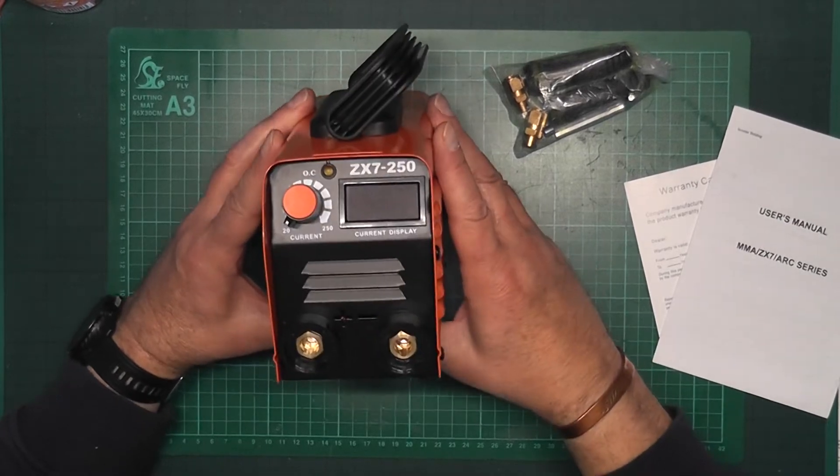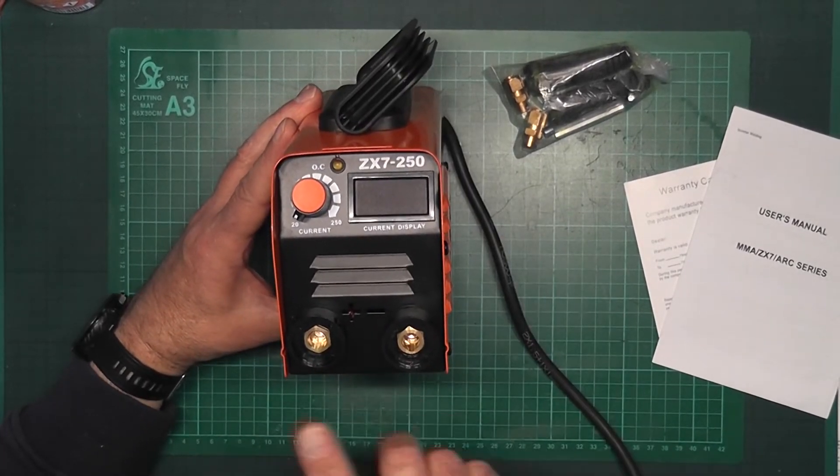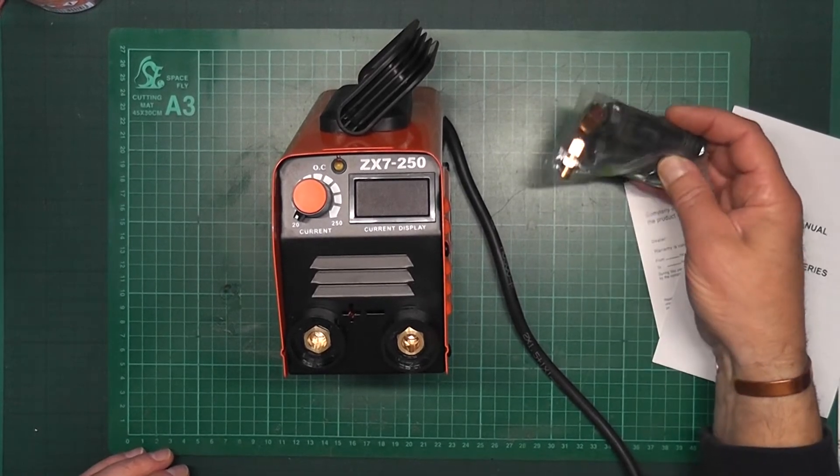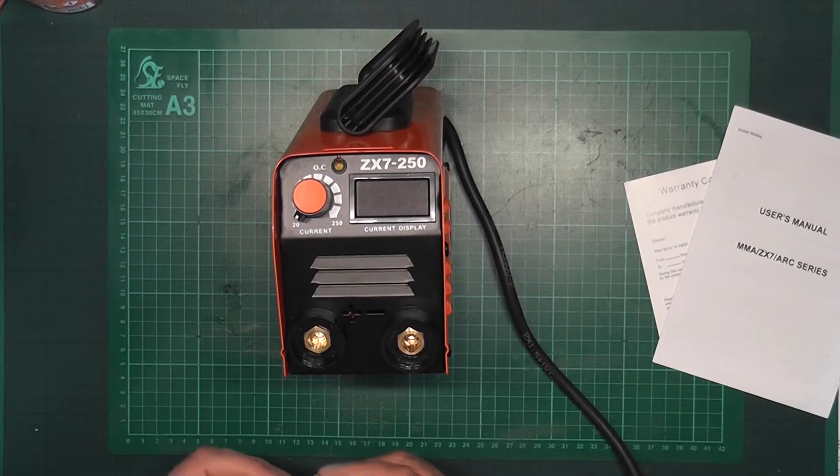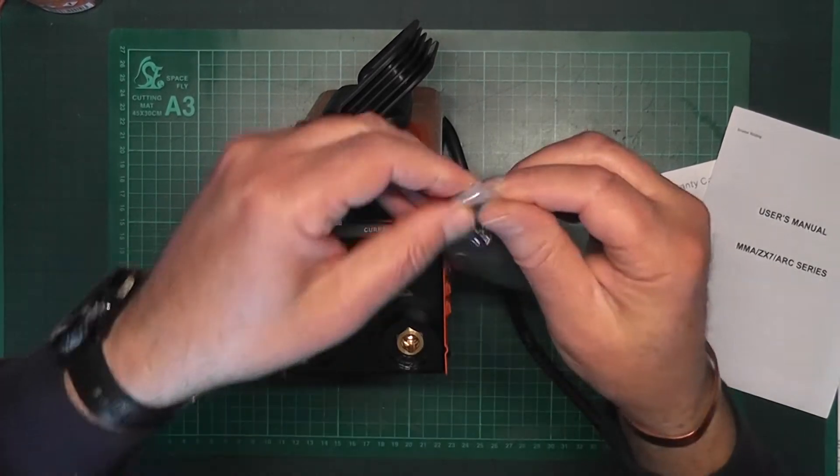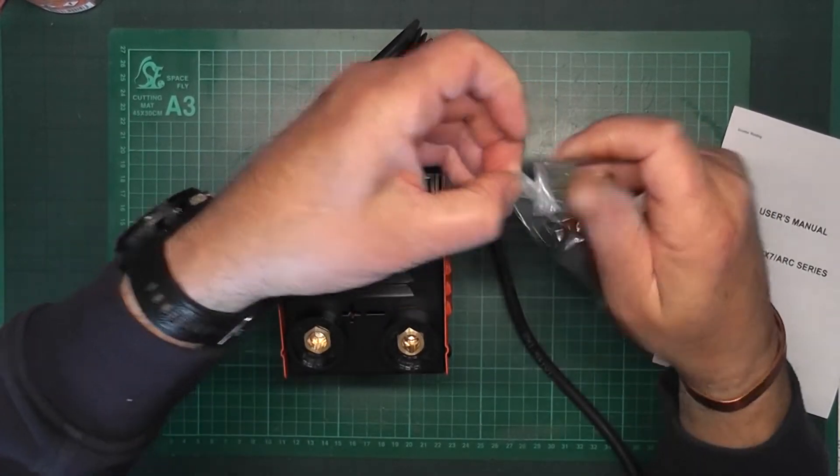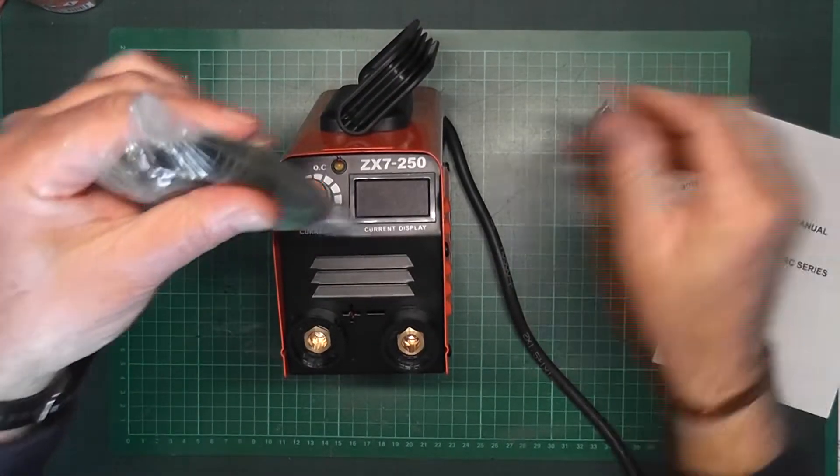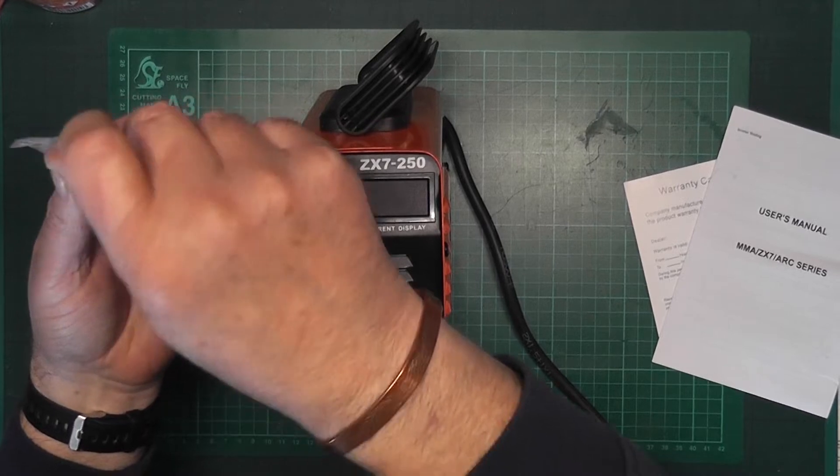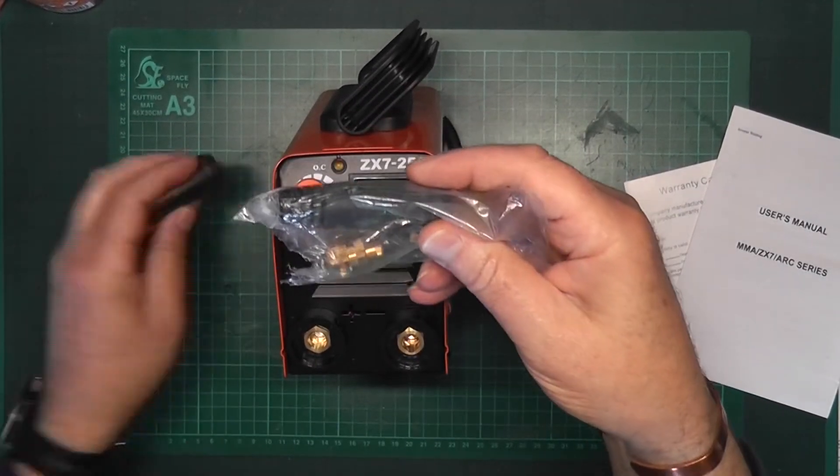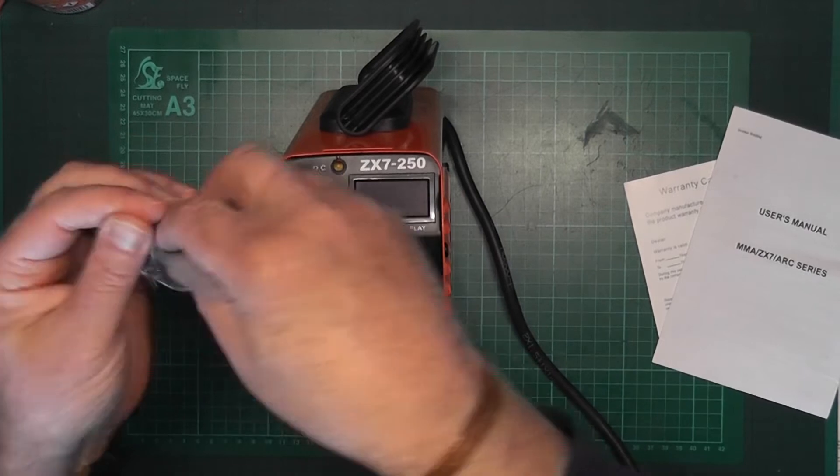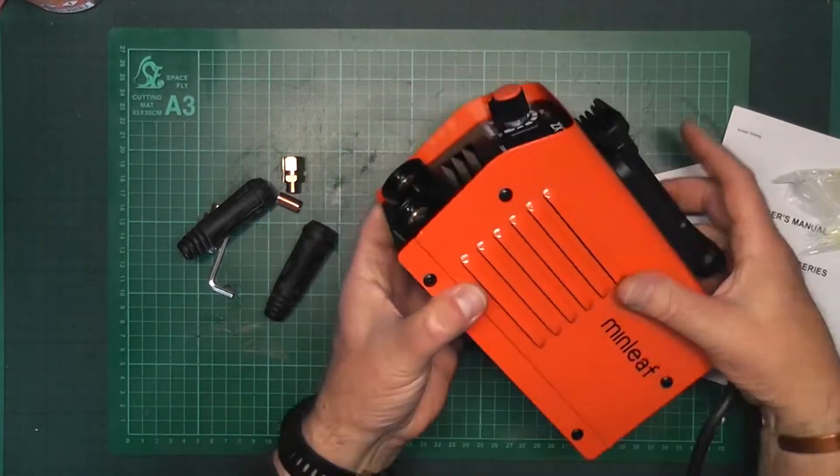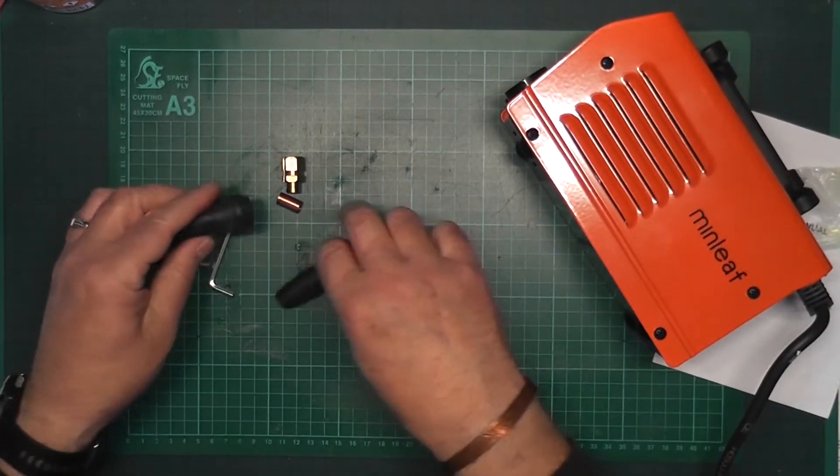So the next step now would be your cables. Now in the box, the box is very small, and there is no cables in the box, which you do have - they do supply connectors. Open that and we'll just take the connectors out.